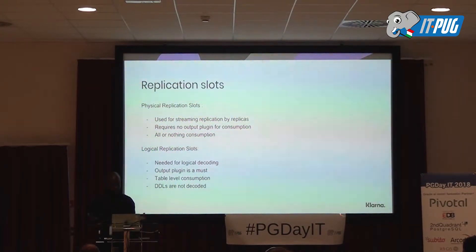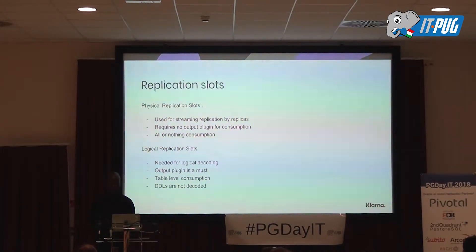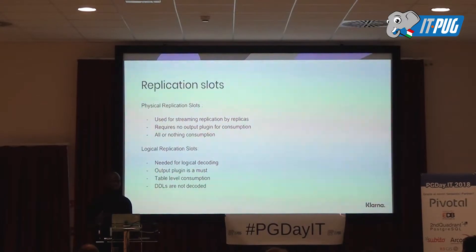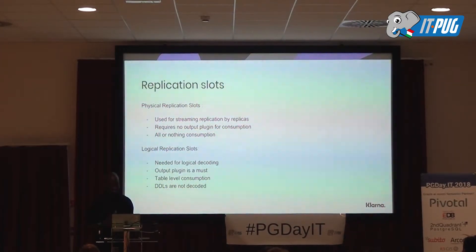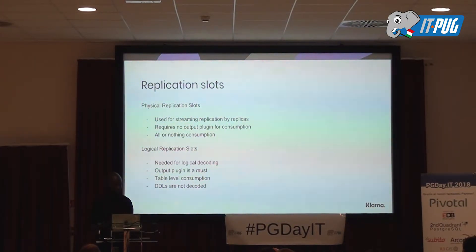There are two kinds of replication slots: physical and logical. Physical replication slots are already used for streaming replication with replicas — you just create it and your replica uses it; no output plugin needed. It consumes everything: DDL, inserts, everything gets shipped from the master to the replica. When it comes to logical replication slots, you need an output plugin. It is used for logical decoding, which means we can have table-level extraction of changes, but DDLs are not decoded — logical decoding does not support DDL extractions.